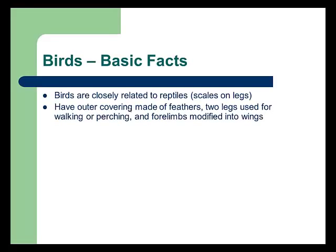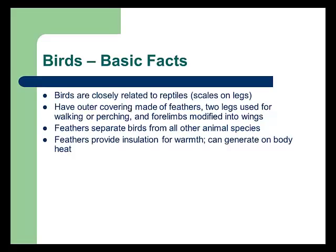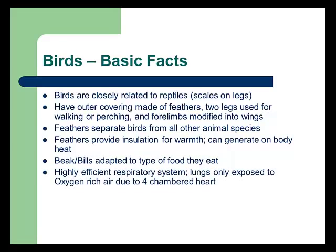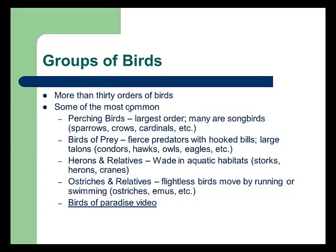Birds are closely related to reptiles — they have scales on their legs. Feathers separate them from all other animal species; feathers insulate for warmth. Birds can generate their own body heat. Their bills and beaks are adapted to the type of food they eat, as we discussed in evolution. They have a highly efficient respiratory system and four-chambered hearts — the first group where all have four chambers for greater efficiency. They use internal fertilization and amniotic eggs. There are more than 30 orders of birds, including perching birds, birds of prey, herons, ostriches, and birds of paradise.